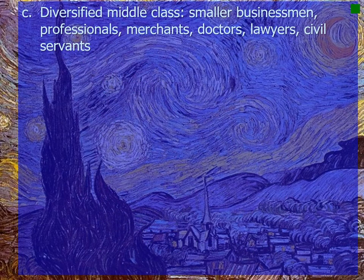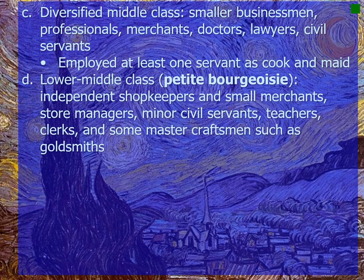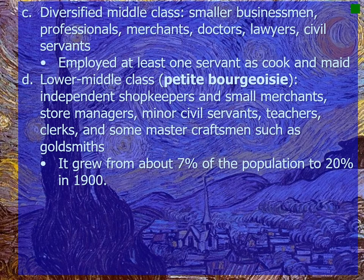The diversified middle class included smaller businessmen, professionals, merchants, doctors, lawyers, and civil servants, most of whom employed at least one servant. The lower middle class, or petite bourgeoisie, comprised independent shopkeepers, small merchants, store managers, minor civil servants, teachers, clerks, and some master craftsmen like goldsmiths. The petite bourgeoisie grew from about 7% of the population to about 20% by 1900. Women worked as department store clerks, stenographers, secretaries, waitresses, and nurses, holding more than half of post office and government clerical jobs by 1911.